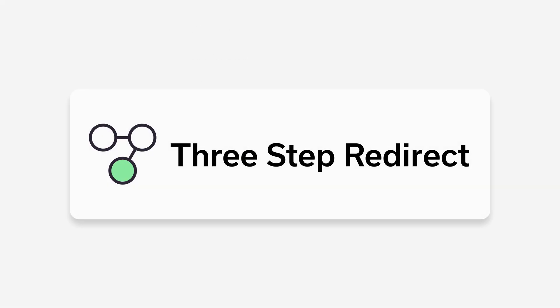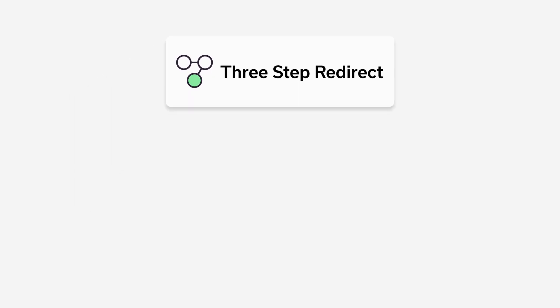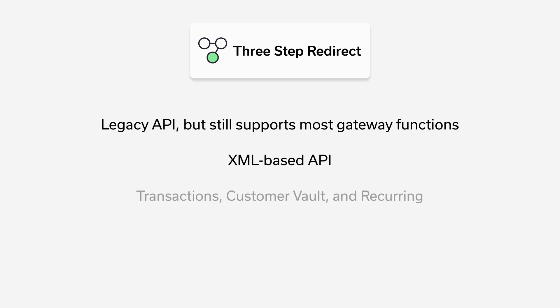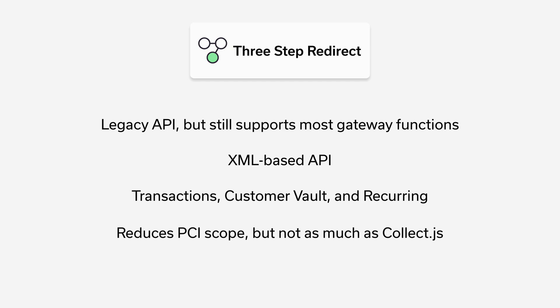The final transaction API that is also for the web is the Three-Step Redirect API. This API is kind of a legacy product, but it still works very well. It's an XML-based API that lets you run transactions, add to the vault, do recurring — all the things the Direct Post can do. But it does it in a three-step process that takes the merchant a little more out of scope, not as cleanly as using CollectJS with the Direct Post, but it reduces their contact with the credit card number, which some merchants prefer. This API also supports 3DS, so if a merchant is using 3DS on the web, currently this is the API they want to use.